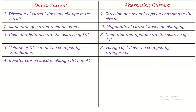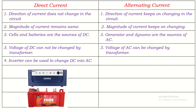An inverter can be used to change DC into AC. The inverter which we use at home actually converts direct current into alternating current. A battery is the source of direct current, and that is converted into alternating current by the inverter. It converts the electrical energy stored in the battery into alternating current — the battery supplies DC and the same is converted into AC by the inverter.